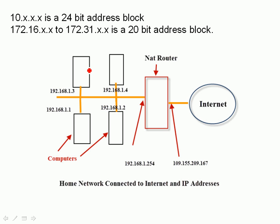So how does a computer on the internal network communicate with a web server or whatever out on the internet? It can't use these internal IP addresses because they'll get discarded. What it does use is the external IP address. The ability to do that is provided by the NAT router — it allows any computer on the internal network to communicate with any computer on the external network using a single IP address, which is the external IP address.